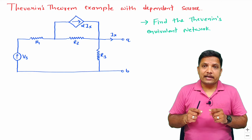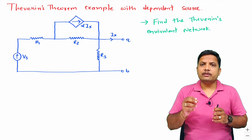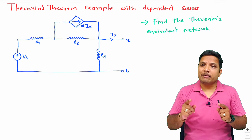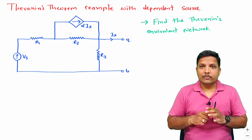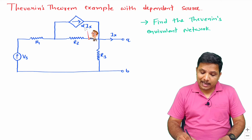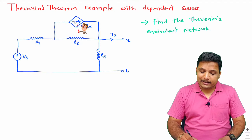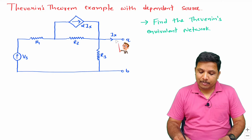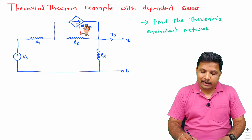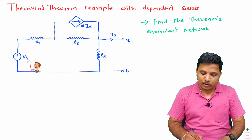When you calculate RTH and VTH for the case of dependent source, there are few modifications that you should take care of. I'll explain step by step what those modifications are. If you observe this circuit, there is a current source having value alpha·Ix, and Ix is passing through this branch as well. So this current source is dependent on the current passing through this branch — this is a dependent current source. And this voltage source has a constant value Vs — so this is an independent voltage source.